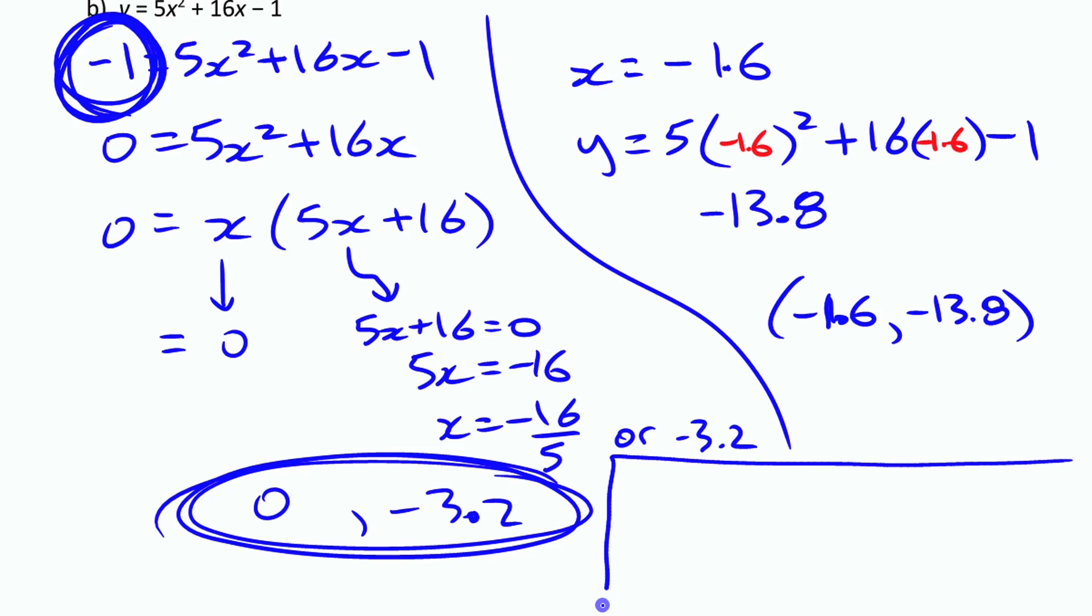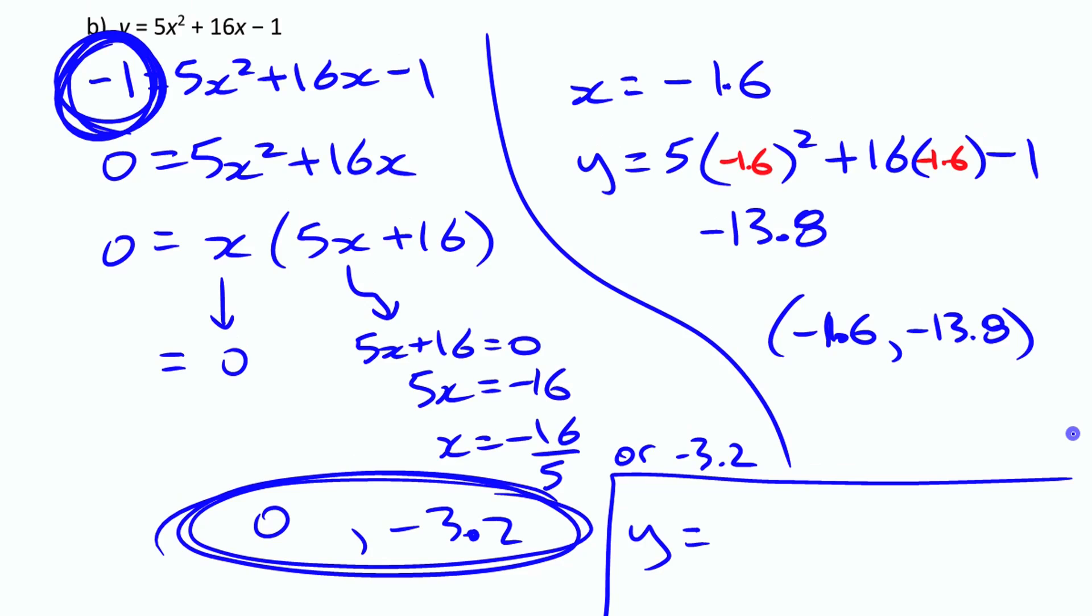And then, not much room here, but if I was trying to write the thing in vertex form, I could do it again by just using those two values. If it's negative 1.6, you have x plus 1.6 in here. I have minus 13.8 on the end. And my a value is the same as the a value there. It's 5.